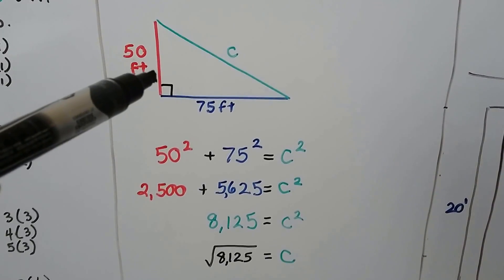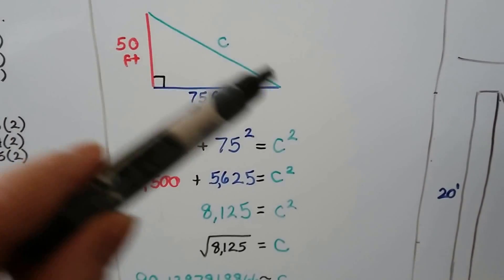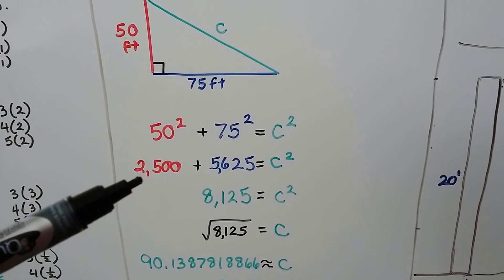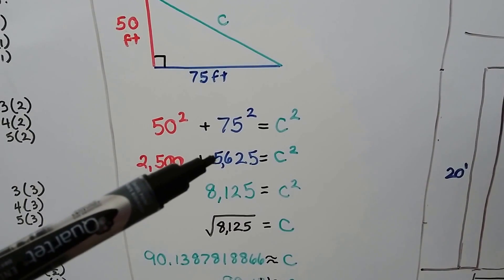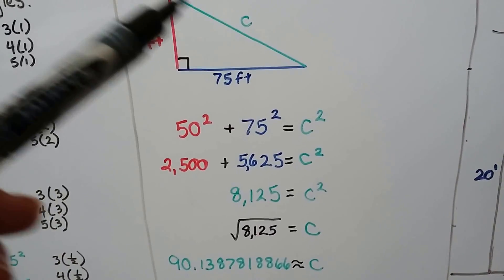Here we've got a side length of 50 feet and another one of 75 feet, and now the hypotenuse is missing. We do 50 times 50, which is 2,500, plus 75 times 75, which is 5,625.